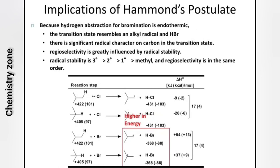Radical stability order is: tertiary (3°) greater than secondary (2°) greater than primary (1°) greater than methyl. Radical selectivity follows the same order. This means radical stability directly determines the regioselectivity of the reaction.